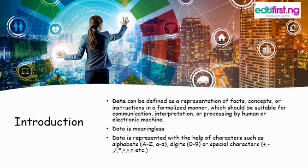Data is a collection of unprocessed raw facts or figures. Data is represented with the help of characters such as alphabet, digit, or special character. An example of data is when a student gets admission into a college — the student normally fills an admission form. This admission form contains raw facts, which is the data of a student, such as his name, gender, photograph, father's name, address, previous school, and grade.